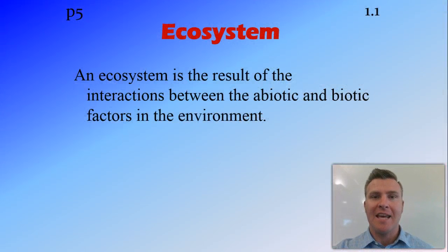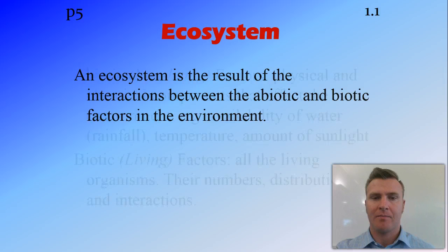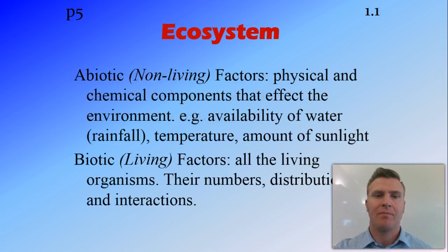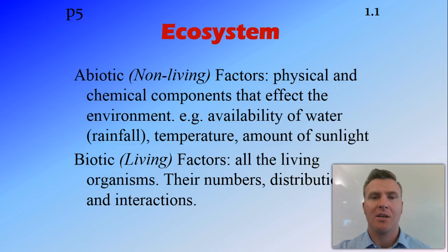An ecosystem is a result of all of the interactions between the abiotic and the biotic factors — so between the non-living and the living factors in the environment or in an area. The abiotic, non-living factors include the physical and chemical components of the ecosystem — all the things that aren't alive in the ecosystem.